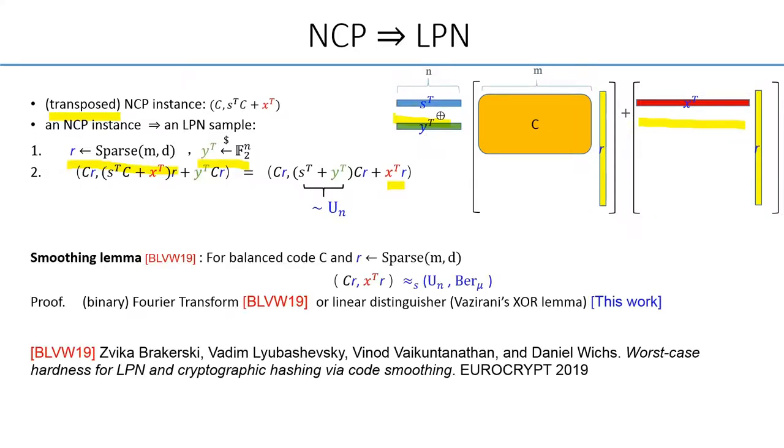At Eurocrypt 2019, Brakerski, Langlois, Peikert, Regev and Stehlé gives a smoothing lemma to show that this kind of approach actually works, as long as the underlying binary linear code is a balanced code and R is sampled from a special sparse distribution.